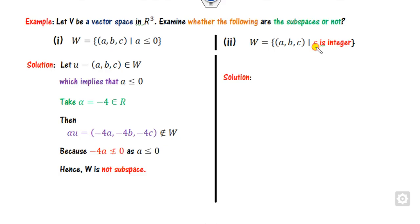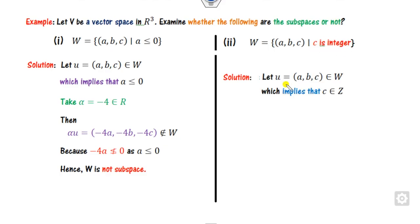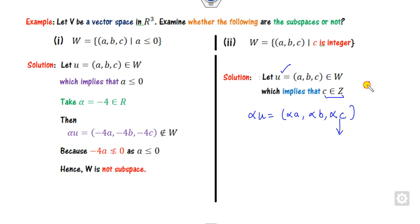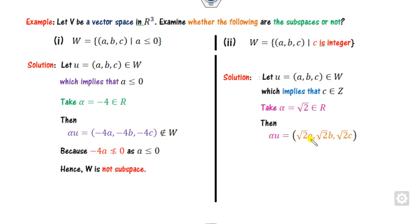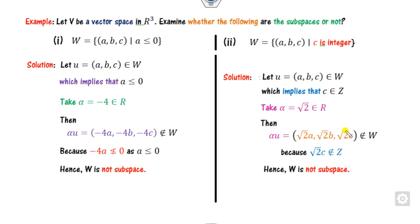Look at another example: W = {(a,b,c) ∈ R³ : c is an integer}. Again let u = (a,b,c) with c an integer. Then alpha*u = (alpha*a, alpha*b, alpha*c). Can alpha*c always be an integer if we multiply by any real scalar alpha? No — for example, if alpha = √2, which is irrational, then alpha*c is not an integer. Hence it is not a subspace.